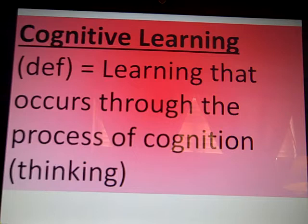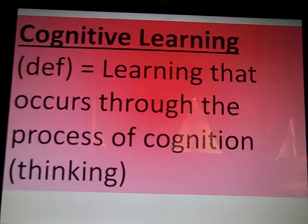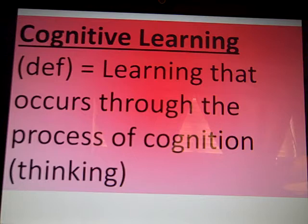Here is the next video lecture on our unit on learning. We've covered classical conditioning and we've covered instrumental or operant conditioning. Now we're moving to the third of the four types of learning that we'll talk about. Cognitive learning represents a departure from both classical and instrumental conditioning — we're moving toward the idea that we can learn just by thinking about things. Cognitive means thinking: learning that occurs through the process of thinking.